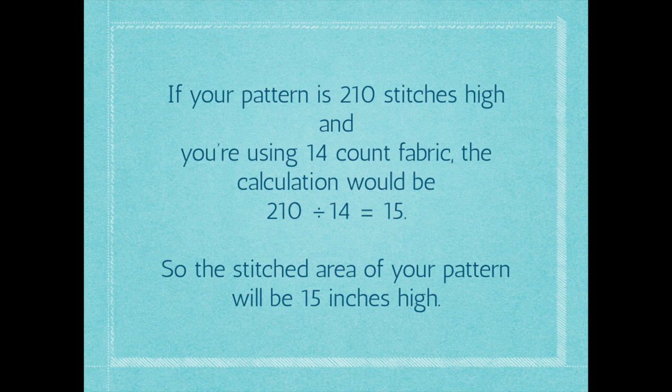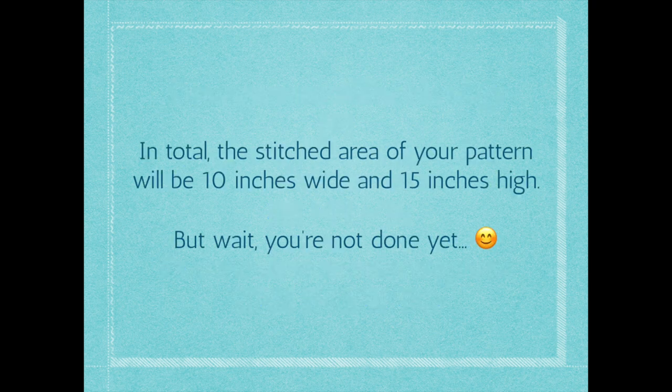I know it sounds really complicated, but once you actually do this once or twice you're going to think, oh, that's actually not as hard as I thought. This is why I want you to write this stuff down and actually practice — if you have some patterns around, play with this and have a little practice. So for this particular example, we said it was 140 stitches wide, so that equals 10 inches wide of stitched area, and we said it was going to be 210 stitches tall, so that's 15 inches high. That is the stitched area — this is where your stitching is going to cover on your fabric.